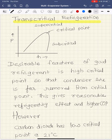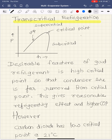Dear friends, this video will explain the concept of the transcritical refrigeration cycle. To understand what a transcritical refrigeration cycle is, we need to look at the pressure-enthalpy diagram. We are familiar with the pressure-enthalpy diagram. This is the vapor dome, and below the vapor dome the region is called the subcritical region. The top of the vapor dome is referred to as the critical point, and below the critical point we have the region where the refrigerant boils.